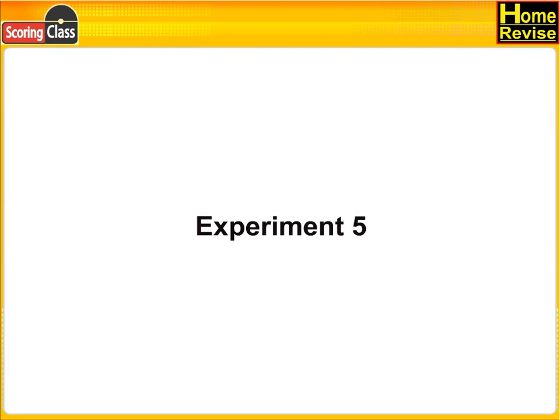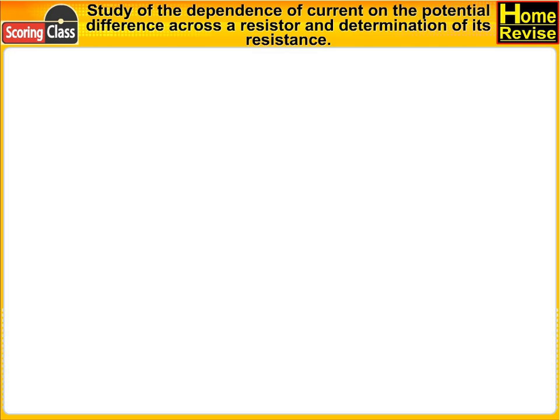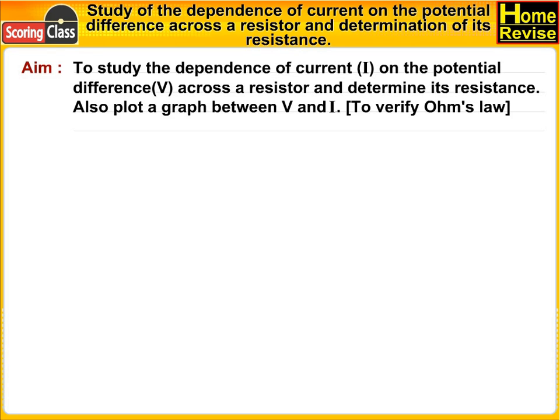Experiment 5: Study of the dependence of current on the potential difference across a resistor and determination of its resistance. Aim: To study the dependence of current I on the potential difference V across a resistor and determine its resistance.